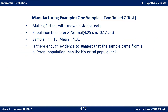Let's do an example — I'm going to use the same example for this video and the next. We'll take a manufacturing example: a one-sample two-tailed z-test. We're making pistons with known historical data. We know the diameter of the pistons is distributed normally with a mean of 4.25 and a standard deviation of 0.12 centimeters — that's for individual piston diameters. We then take a sample of size 16 and find the sample mean diameter is 4.31 centimeters.